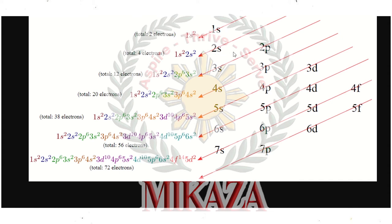In the second shell we have 8 electrons: S has 2, so P has 6. P has superscript 6 and S has superscript 2. D has 10 electrons (superscript 10), and F has 14 electrons (superscript 14). Now to write the configuration for 15 electrons: 1s² uses 2 electrons, leaving 13.